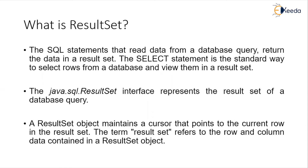First, let's understand what is a result set. The SQL statement reads data from a database query and writes the data in a result set. So whenever we are executing a SQL statement, we get a result as some data from the database table. That needs to be represented so that a Java application can use it. In the java.sql package, we have a result set interface that represents the result of a database query. A result set object maintains a cursor that points to the current row in the result set. The term result set refers to the rows and columns which contain data in a result set object.